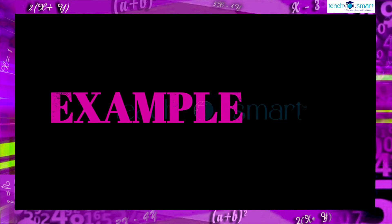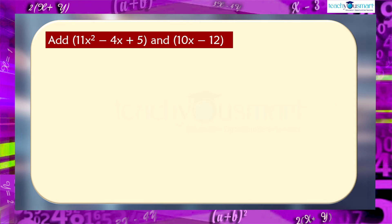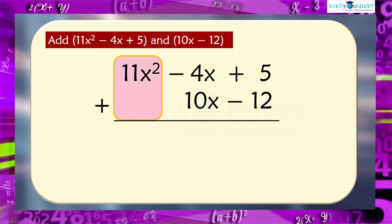Let's see another example. Add 11x square minus 4x plus 5 and 10x minus 12. We can write these two expressions in separate rows with like terms below others. The term 11x square has no like terms in the second expression. So it is carried over as it is.